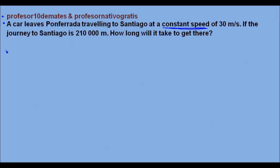V, the velocity or the speed if you prefer, 30 meters per second. The distance is 210,000. And we know that we have a problem of URM, uniform rectilinear motion, because the question says that the speed is constant.